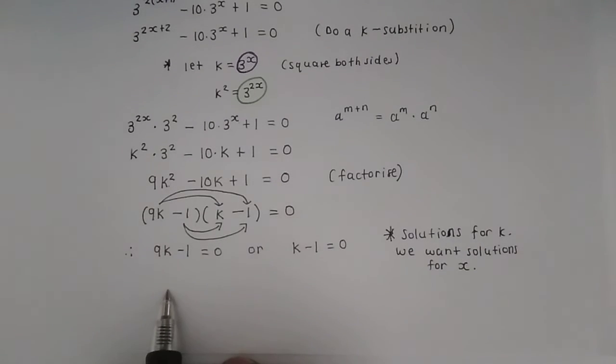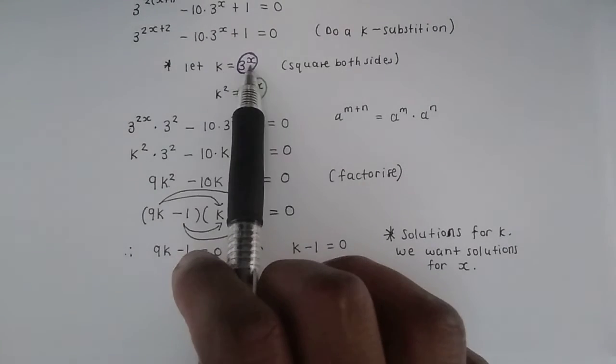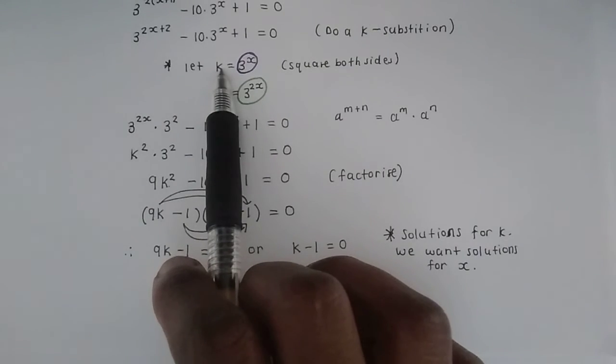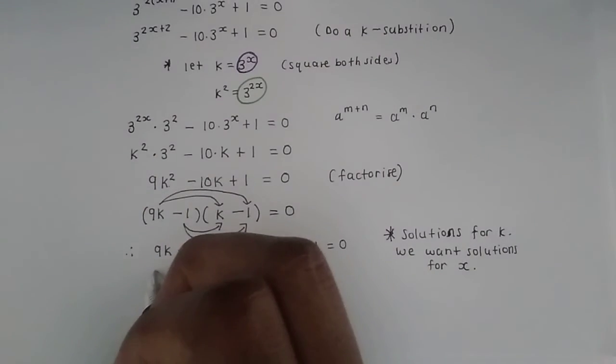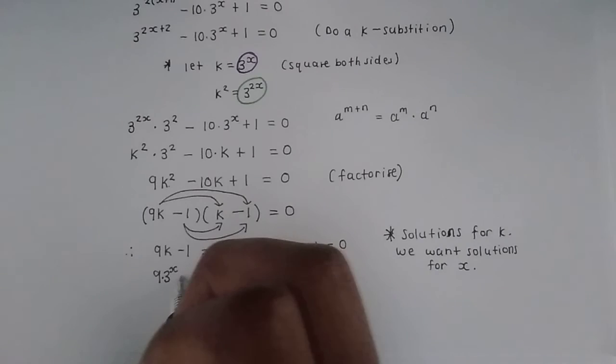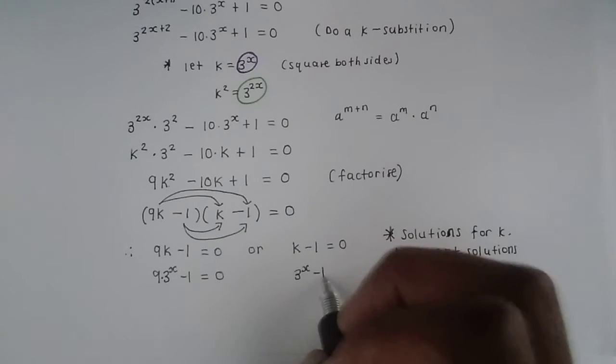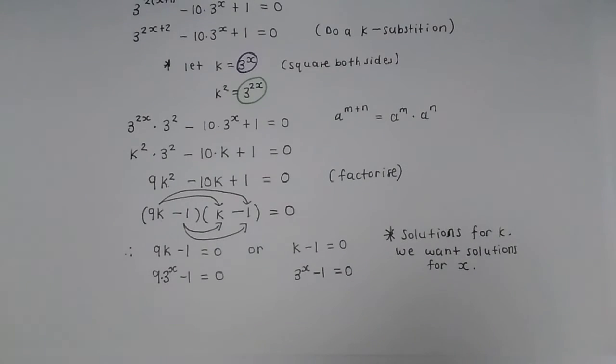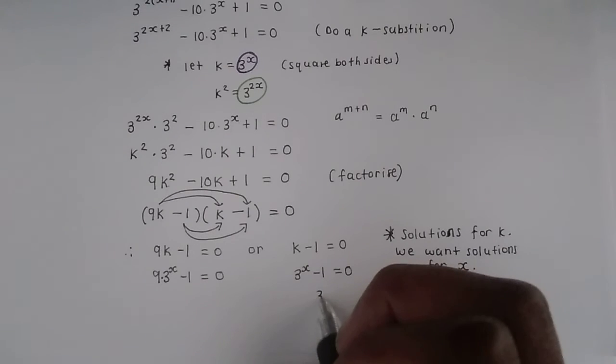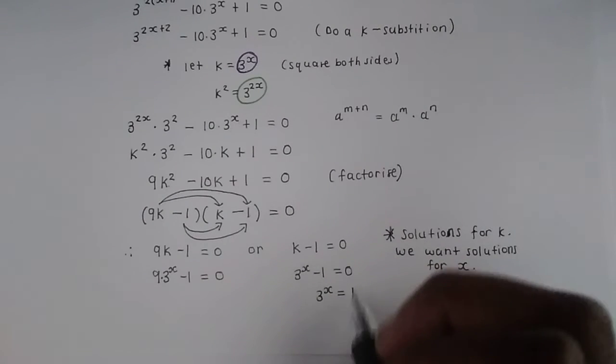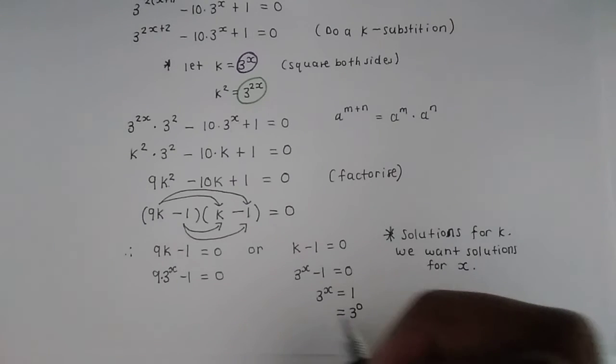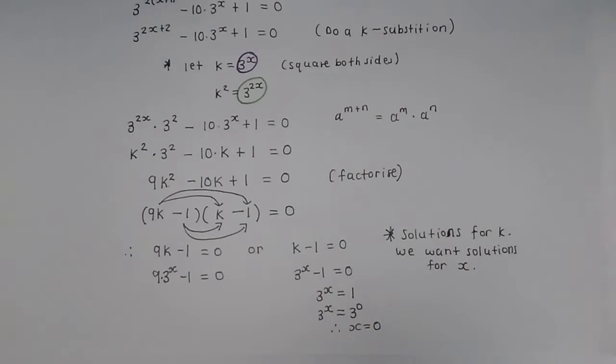So we then need to resubstitute. We need to go back to the step where we said let k equal 3 to the x and now resubstitute the k. So there it is. It's going to have a 9 next to it. And then we need to resubstitute this k with 3 to the x. We do the same thing on the other side. 3 to the x minus 1 equals 0. Let's start this side. It's quite easy to solve. We now have 3 to the x equals 1. We can write 1 with a base 3 as 3 to the exponent of 0. So then therefore x equals 0 is one of our solutions.